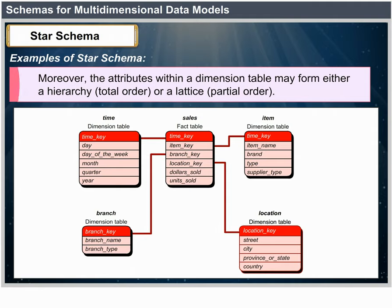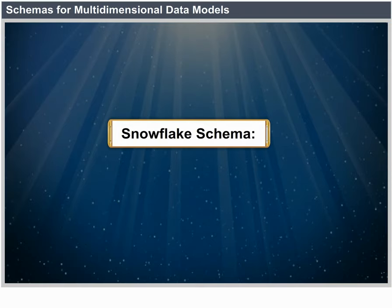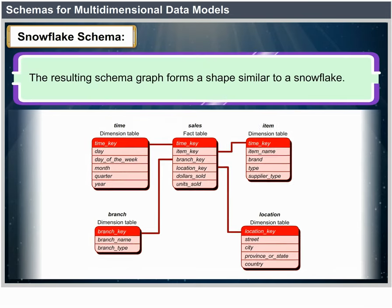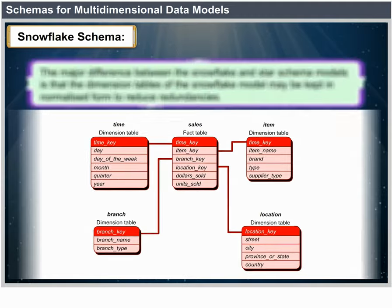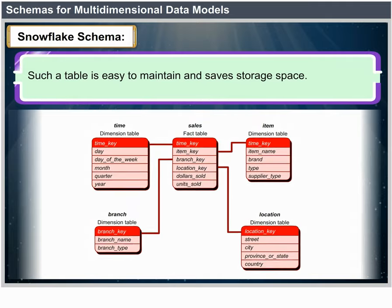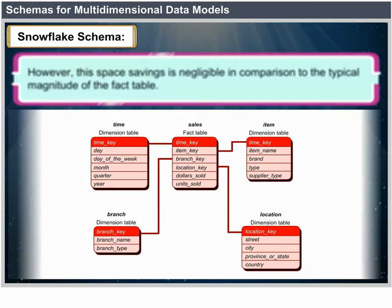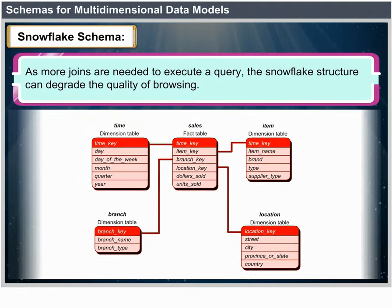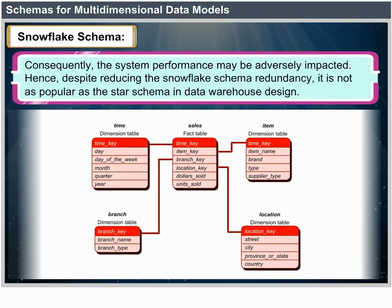The snowflake schema is a variant of the star schema where some dimension tables are normalized, further splitting the data into additional tables — forming a shape similar to a snowflake. The major difference is that dimension tables of the snowflake model may be kept in normalized form to reduce redundancies. Such a table is easy to maintain and saves storage space; however, this space savings is negligible compared to the typical magnitude of the fact table. Furthermore, the snowflake structure can reduce browsing effectiveness since more joins are needed to execute a query, potentially impacting system performance. Although the snowflake schema reduces redundancy, it is not as popular as the star schema in data warehouse design.